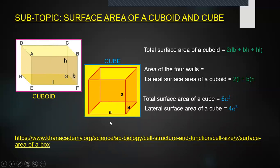Similarly, in a cube, the length, breadth and height will be equal to each other. Here it's being called A. That means all the faces of a cube are square in shape.